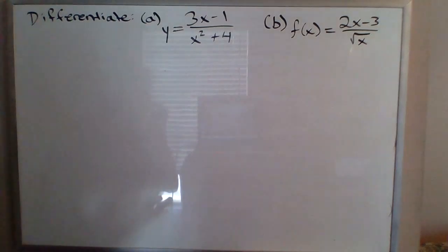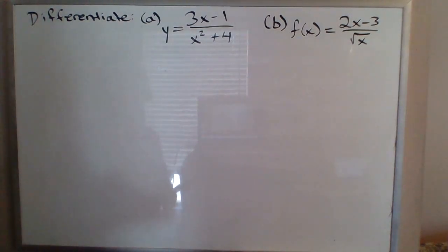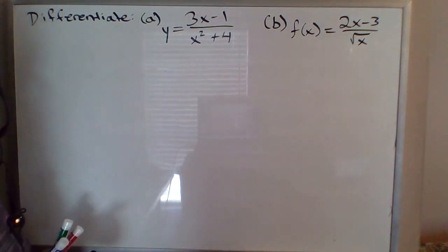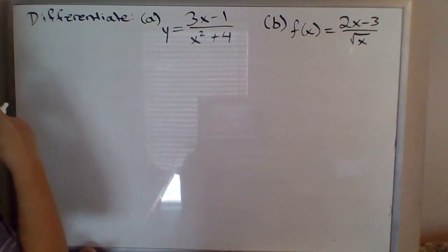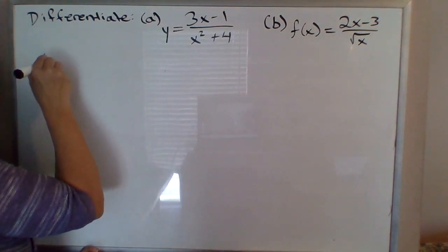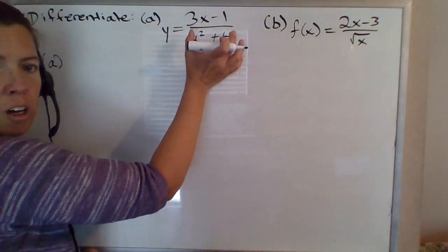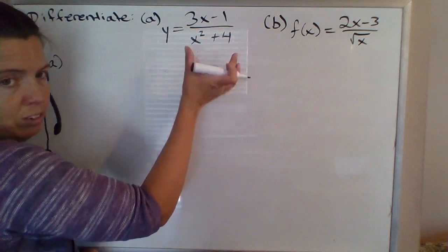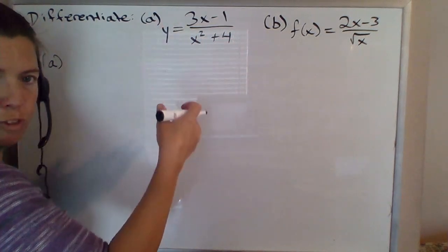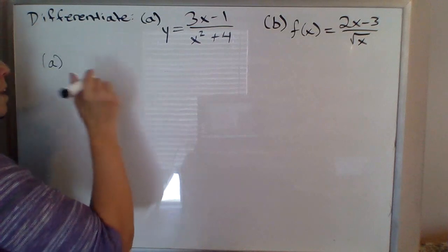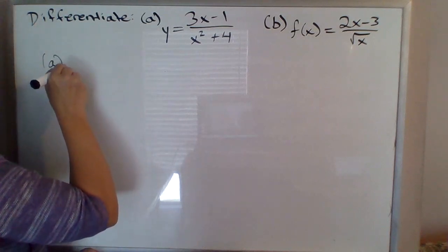Now I'd like to do a couple of introductory examples using the quotient rule, and I'll work on example a here first. Whenever you have a quotient of two functions, f of x over g of x, that's when we will apply the quotient rule.